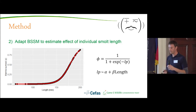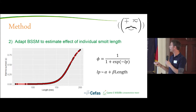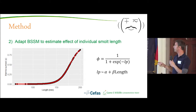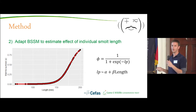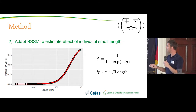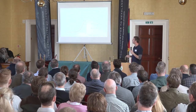Now I wanted to adapt the Bayesian state space model to include the effect of individual smolt length. To do that we use a straightforward logistic regression with an alpha parameter — the individual intercept — and a beta parameter representing the slope of the effect of length on the probability to survive. This produces a sigmoidal curve relating length to survival probability.